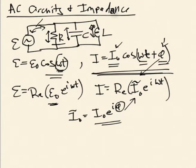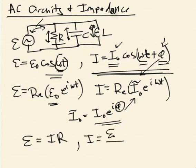For a resistor, it's straightforward. We know the EMF equals IR, so if I'm looking at the current through the resistor, finding the current is trivial — it's just the peak EMF over R times cosine omega t. There's no phase shift, so the current is in phase with the EMF.